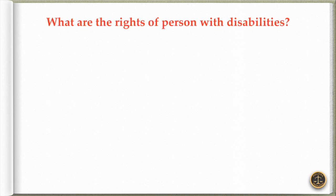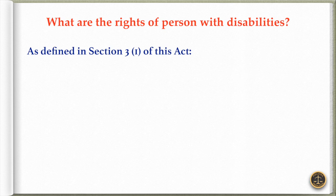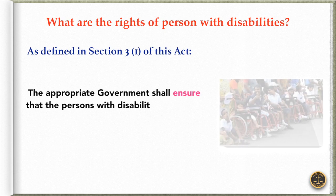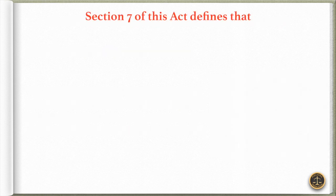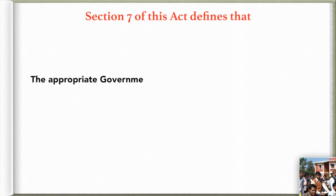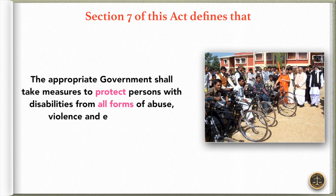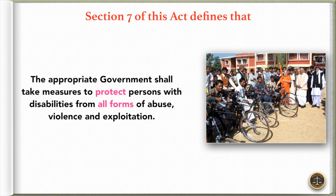As defined in section 3.1 of this act, the appropriate government shall ensure that persons with disabilities enjoy the right to equality, life with dignity, and respect for his or her integrity equally with others. Further, section 7 of this act defines that the appropriate government shall take measures to protect persons with disabilities from all forms of abuse, violence, and exploitation.